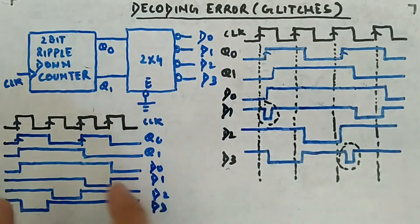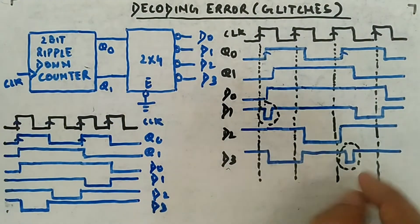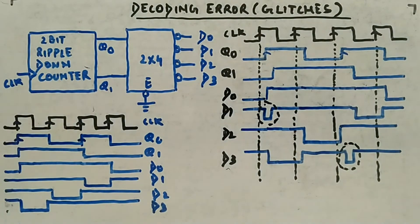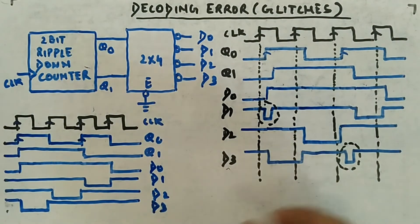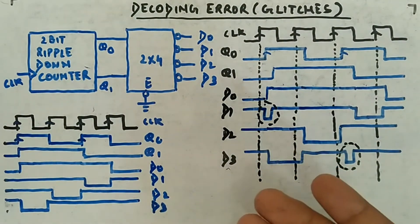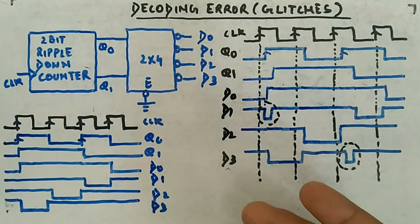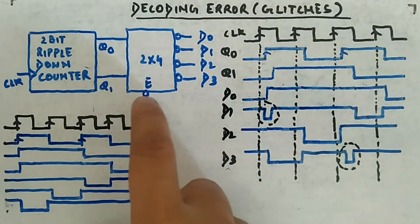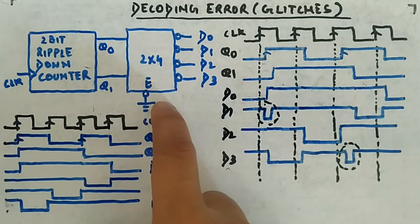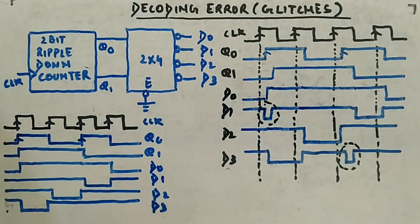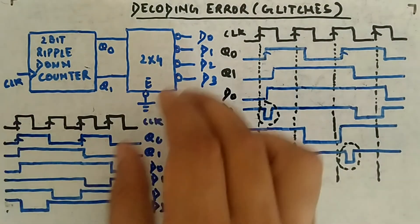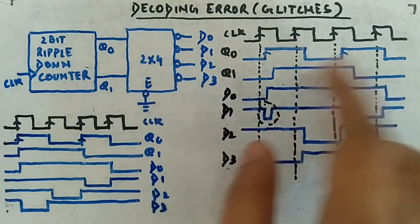The output signal is the same but you are producing short duration glitches or spikes. This is something you don't want in your output — that is the problem. Next, I will tell you how to remove this problem. It has to do with the enable signal — instead of keeping it always enabled, we will provide a signal called a strobe signal.